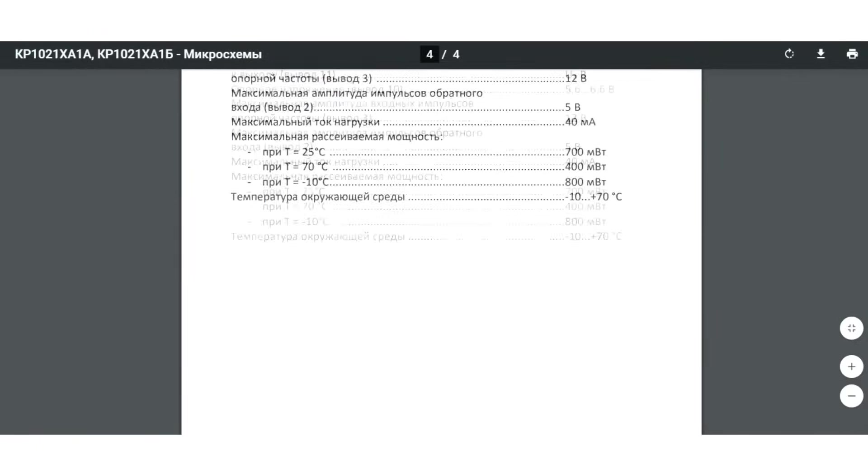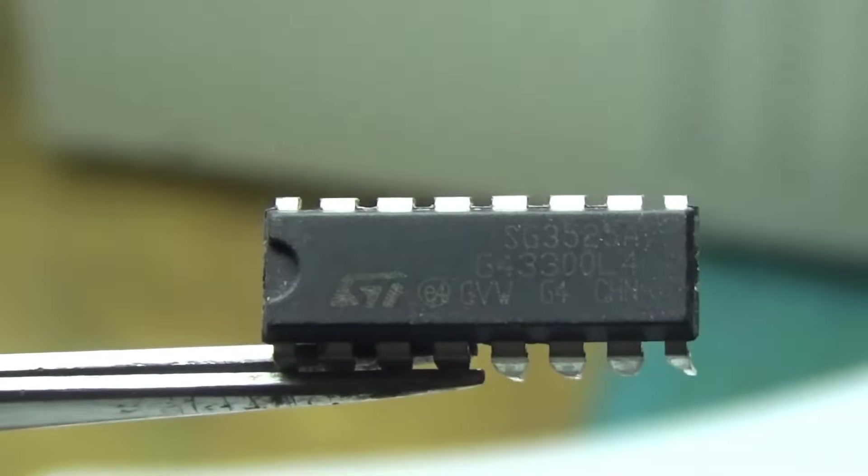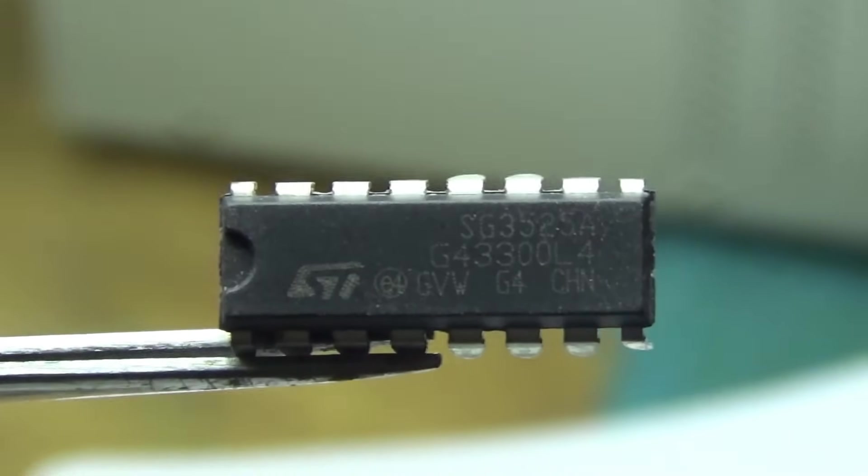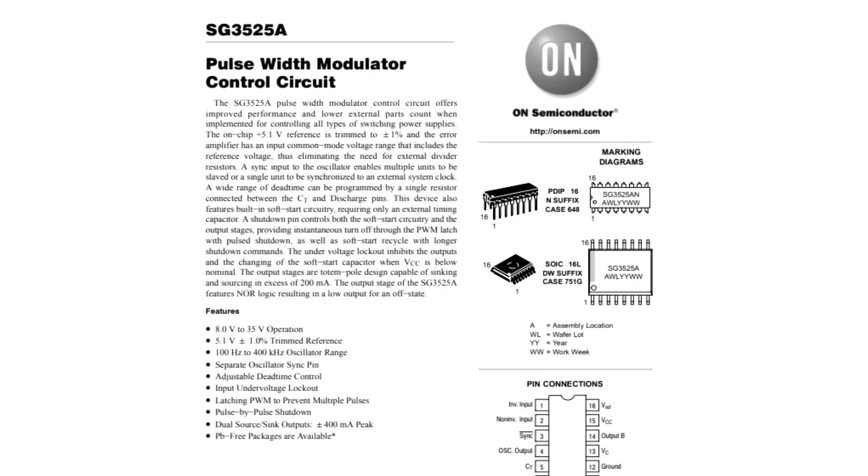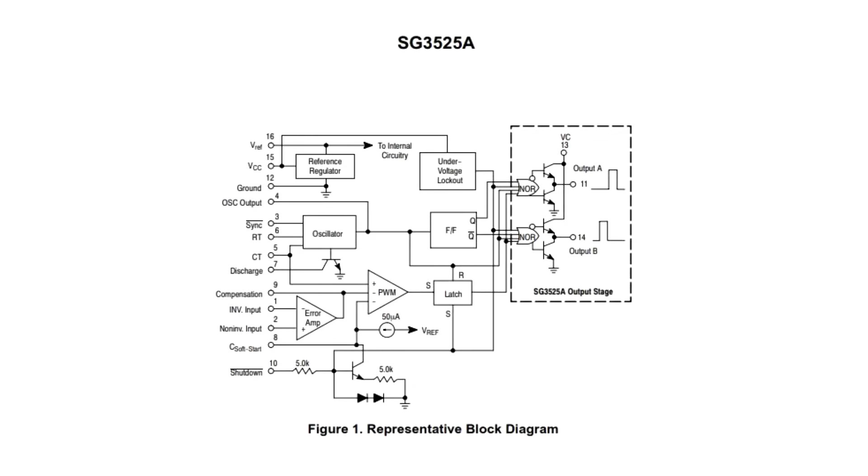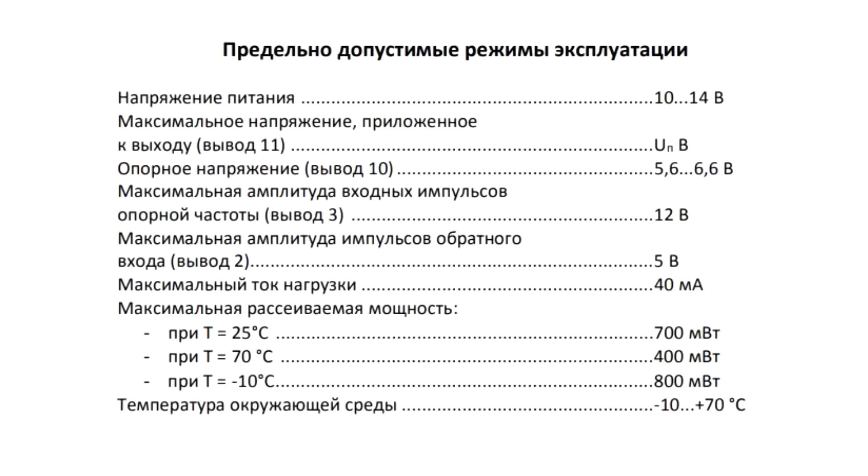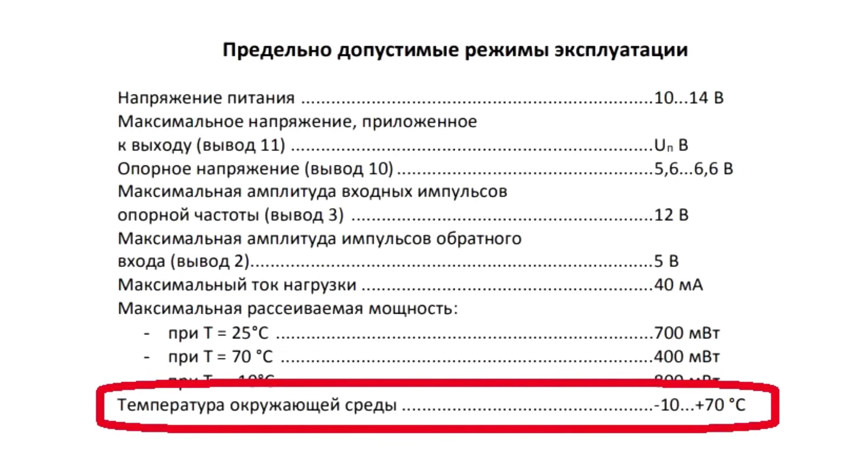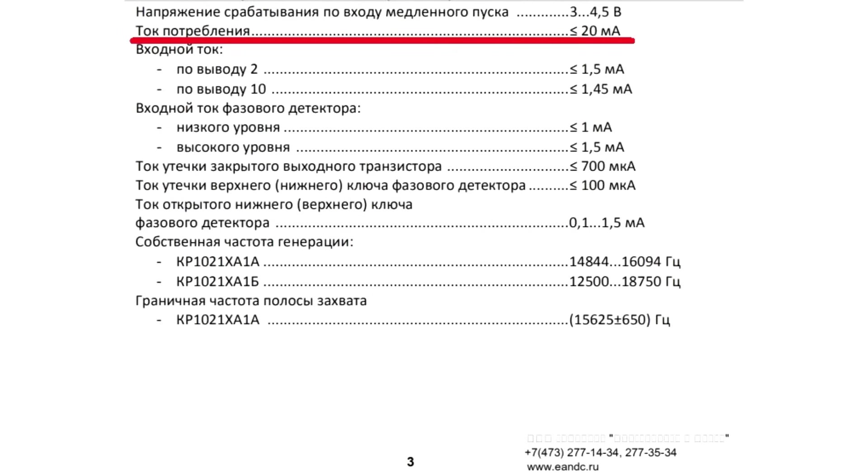In short, a pretty decent Soviet PWM controller with all the amenities. How do you like that SG3525? Although it shouldn't be compared to the SG, as the SG is more precise, has a powerful output stage, and a very high operating frequency. Here, the output current of the microchip is only 40 milliamps. It's also important to note that the microchip can operate in cold temperatures down to minus 10, and its own current consumption is less than or equal to 20 milliamps.